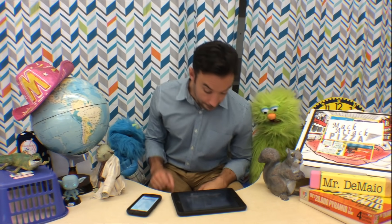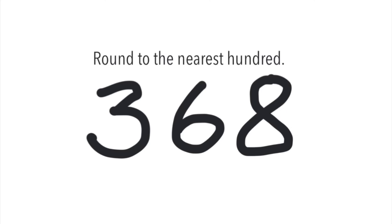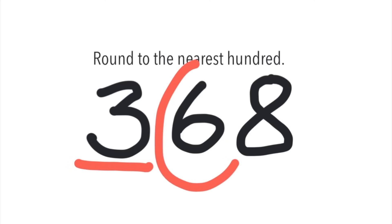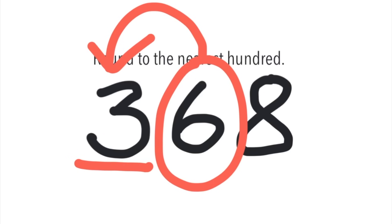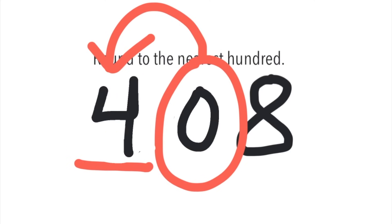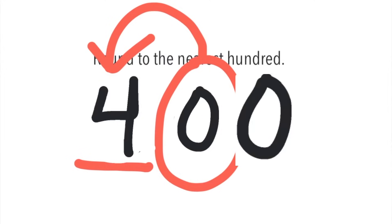One more problem — let's try 368. The directions say round to the nearest hundred. So we underline the number in the hundreds place and circle the number next to it. The number we circled affects the other number tremendously. Is the 6 closer to 10 or 0? It's closer to 10! So we turn the 6 into a 0, and the other number goes up by 1 and becomes a 4. But what about the 8? It turns into a 0 because anything to the right of the circled number also becomes a 0.